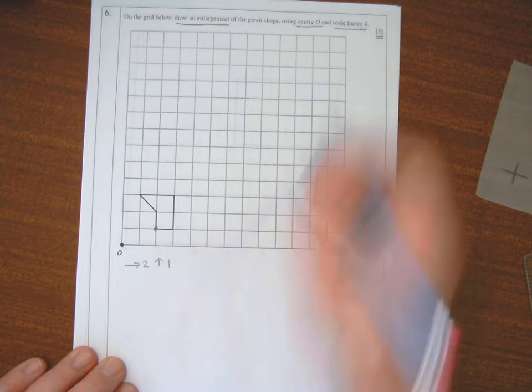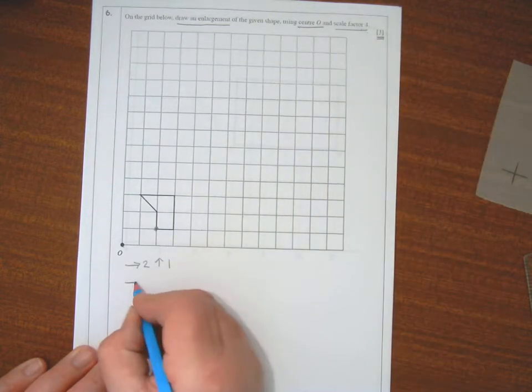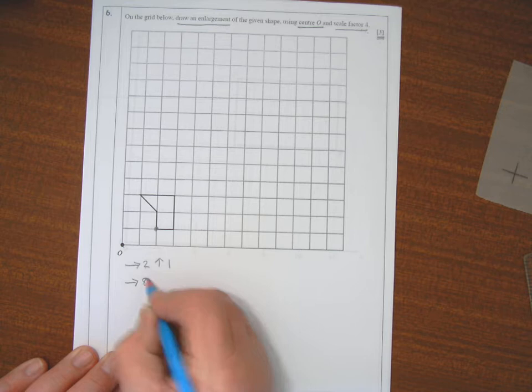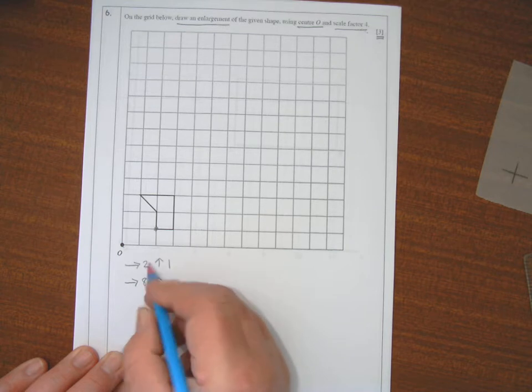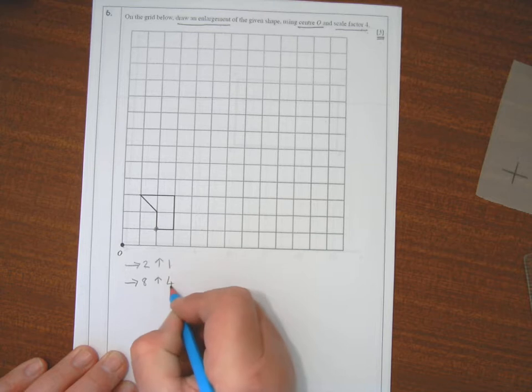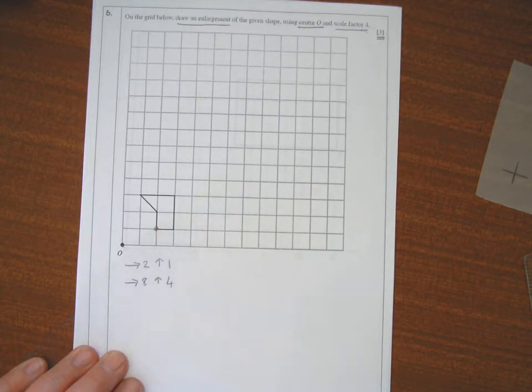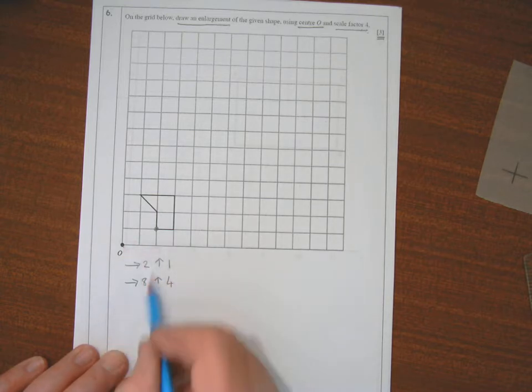On the new shape, because the scale factor is four, I'll be going across eight, because two fours are eight, and up four instead of one, because one times four is four.